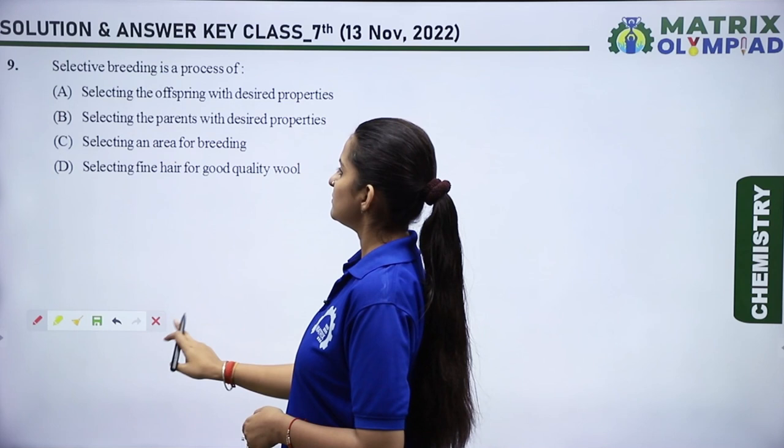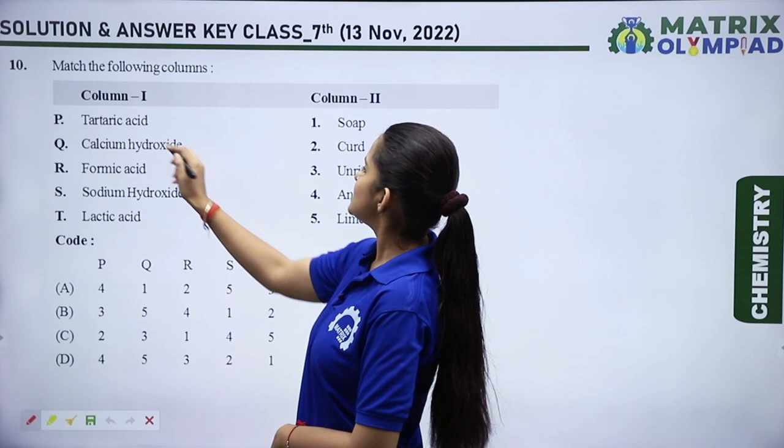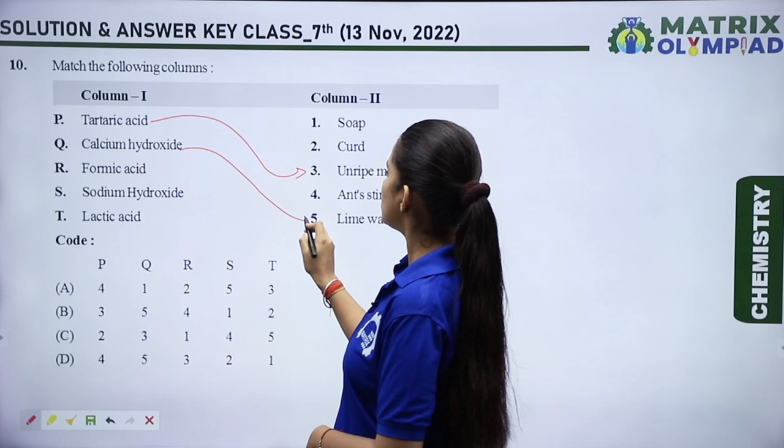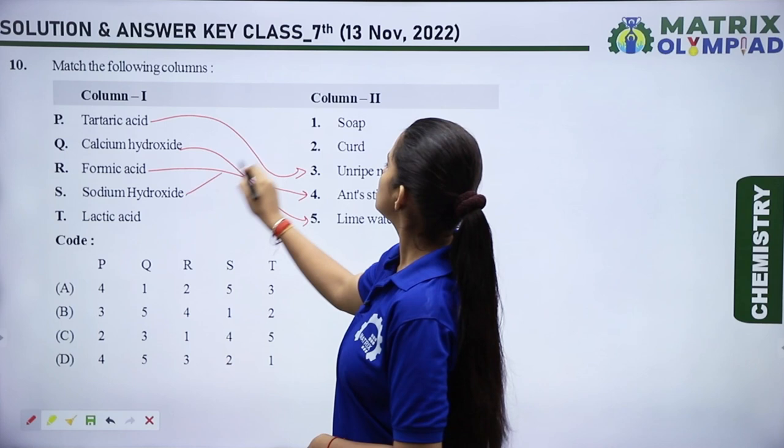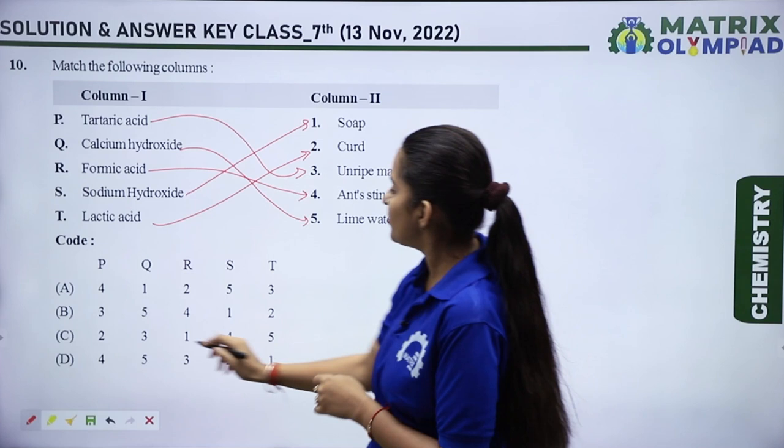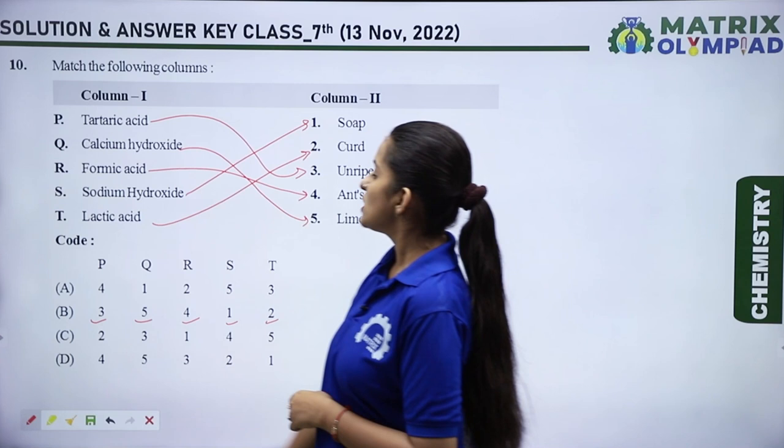Match the following: tartaric acid is present in unripe mangoes; calcium hydroxide is lime water; formic acid is present in ant sting; sodium hydroxide is soap; and lactic acid is in curds. So P matches with 3, Q with 5, R with 4, S with 1, and T with 2. The correct answer is option B.